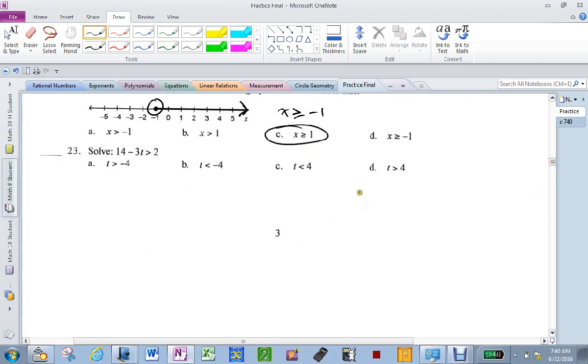Solve this. Solve it just like a regular equation except there's one trick. Minus 14, minus 14, negative 3t is greater than or equal to negative 12. Divide by negative 3. Once you divide by negative 3, you've got to change the sign. So t becomes less than positive 4. c.